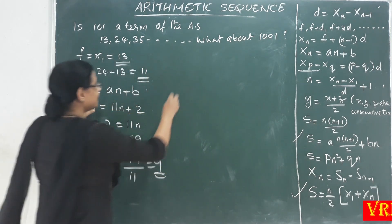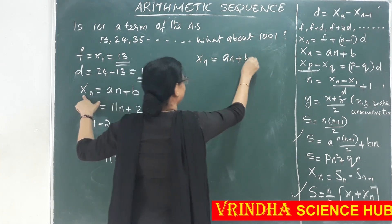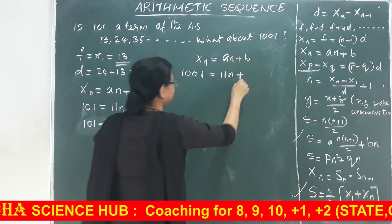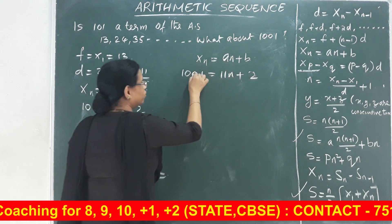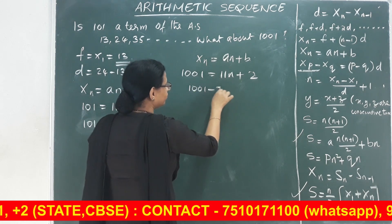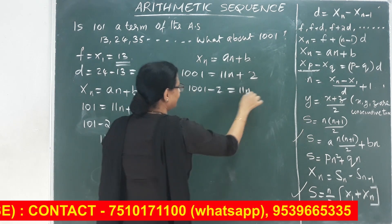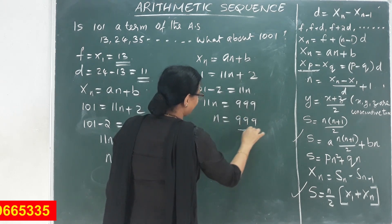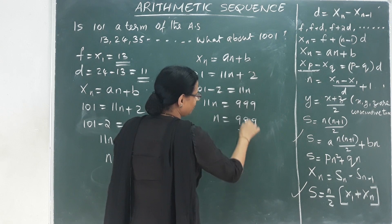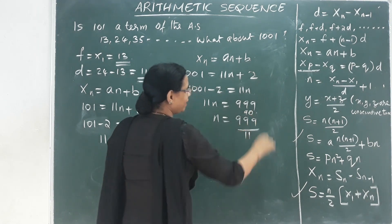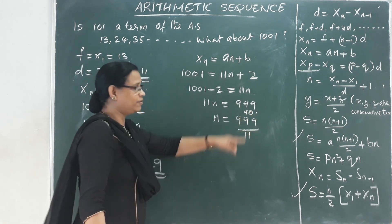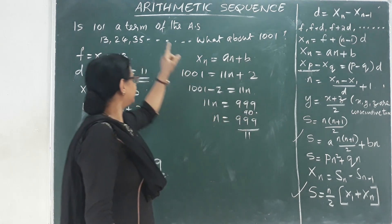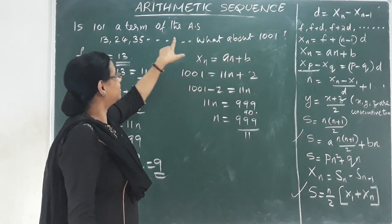For 1001: xn equals 11n plus 2, so 1001 equals 11n plus 2, giving 11n equals 999, and n equals 999 divided by 11, which is approximately 90 point something — a decimal. Since it is not a natural number and not completely divisible, 1001 is not a term in this sequence.